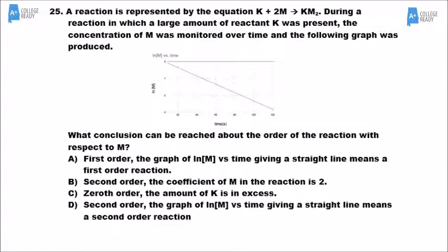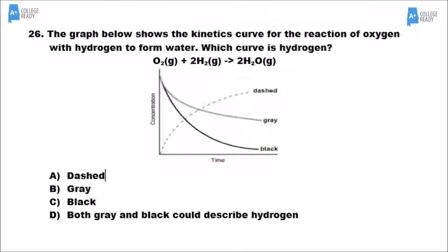Number 25 asks us to analyze a graph showing reaction data. It's a straight line, so we look at the y-axis to see what the units are — and it's the natural log of molarity. Natural log of molarity lines up with the first-order integrated rate law, so it must be A: first order.